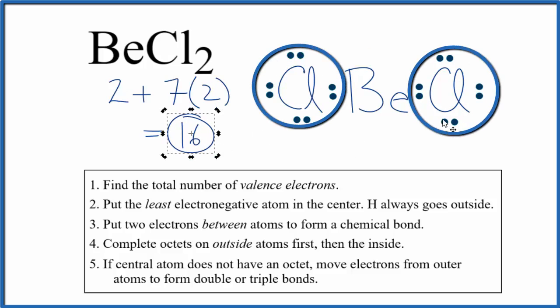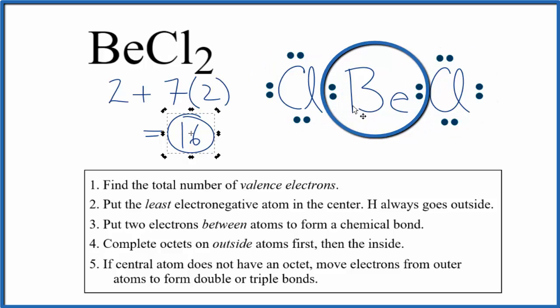Both chlorines have octets, but the beryllium, it only has four electrons, four valence electrons. The thing is, beryllium is an exception to the octet rule. It can have an incomplete octet. So beryllium is okay with four valence electrons.